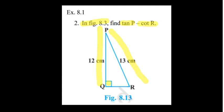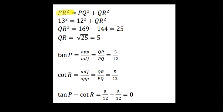So let's get started. PR square equals PQ square plus QR square because PR is the hypotenuse. So 13 square is equal to 12 square plus QR square. Simplify this, you should get QR is equal to 5.